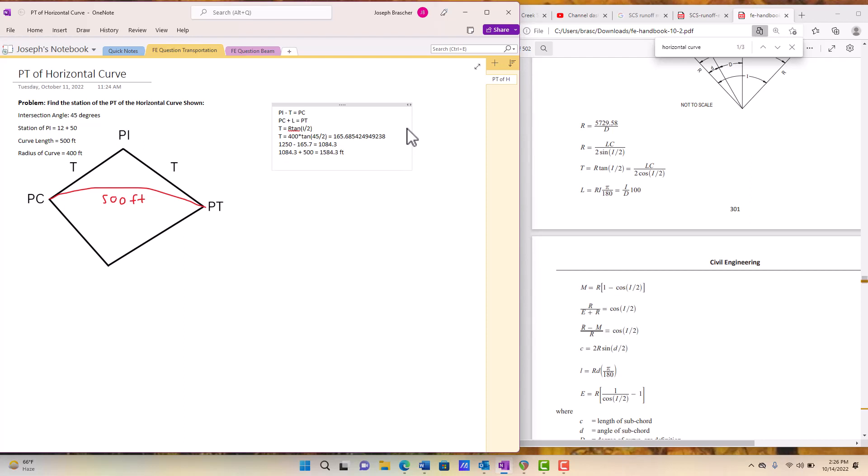And then in stationing, 15 plus 84.3. And so that would be our final answer for the stationing of the PT.